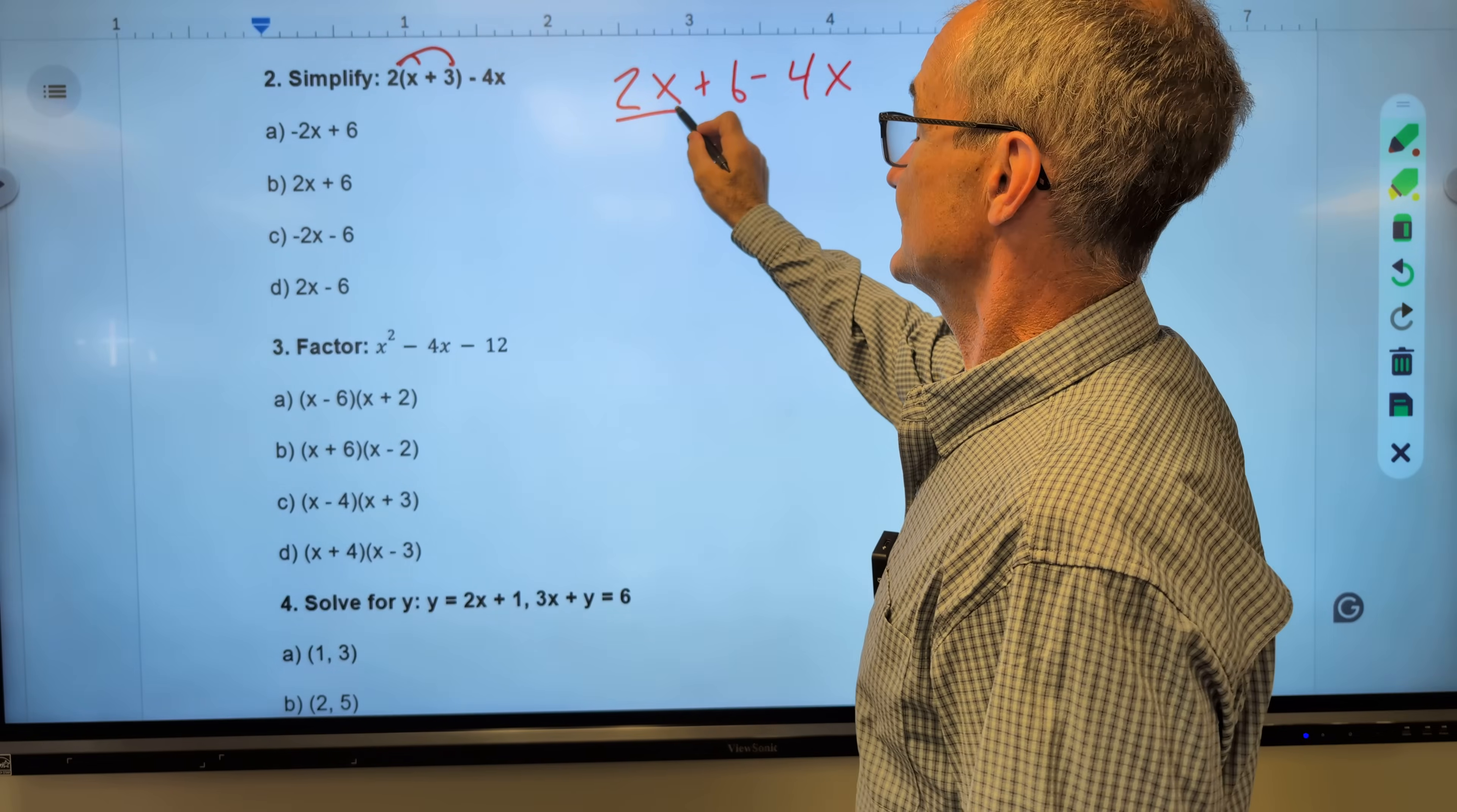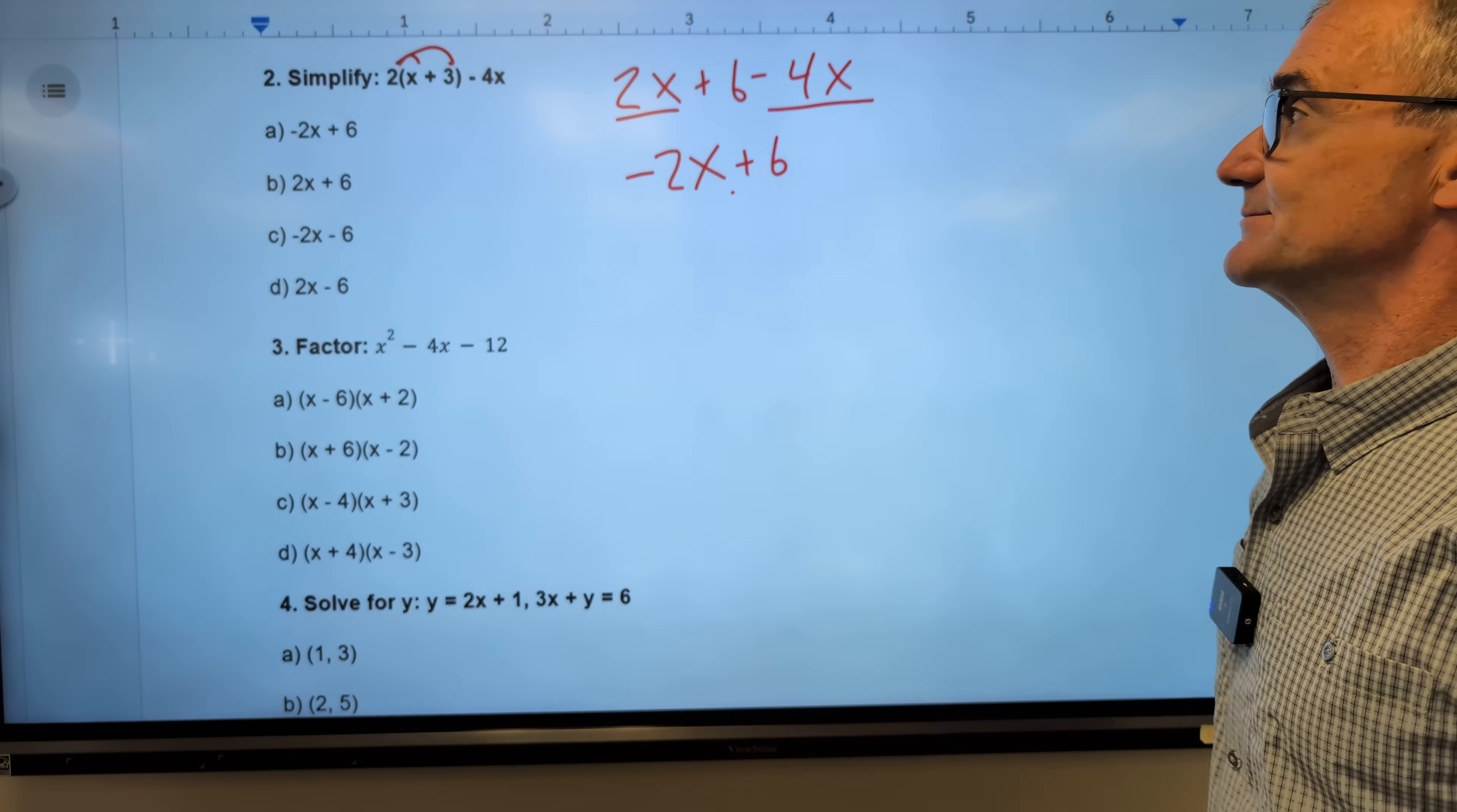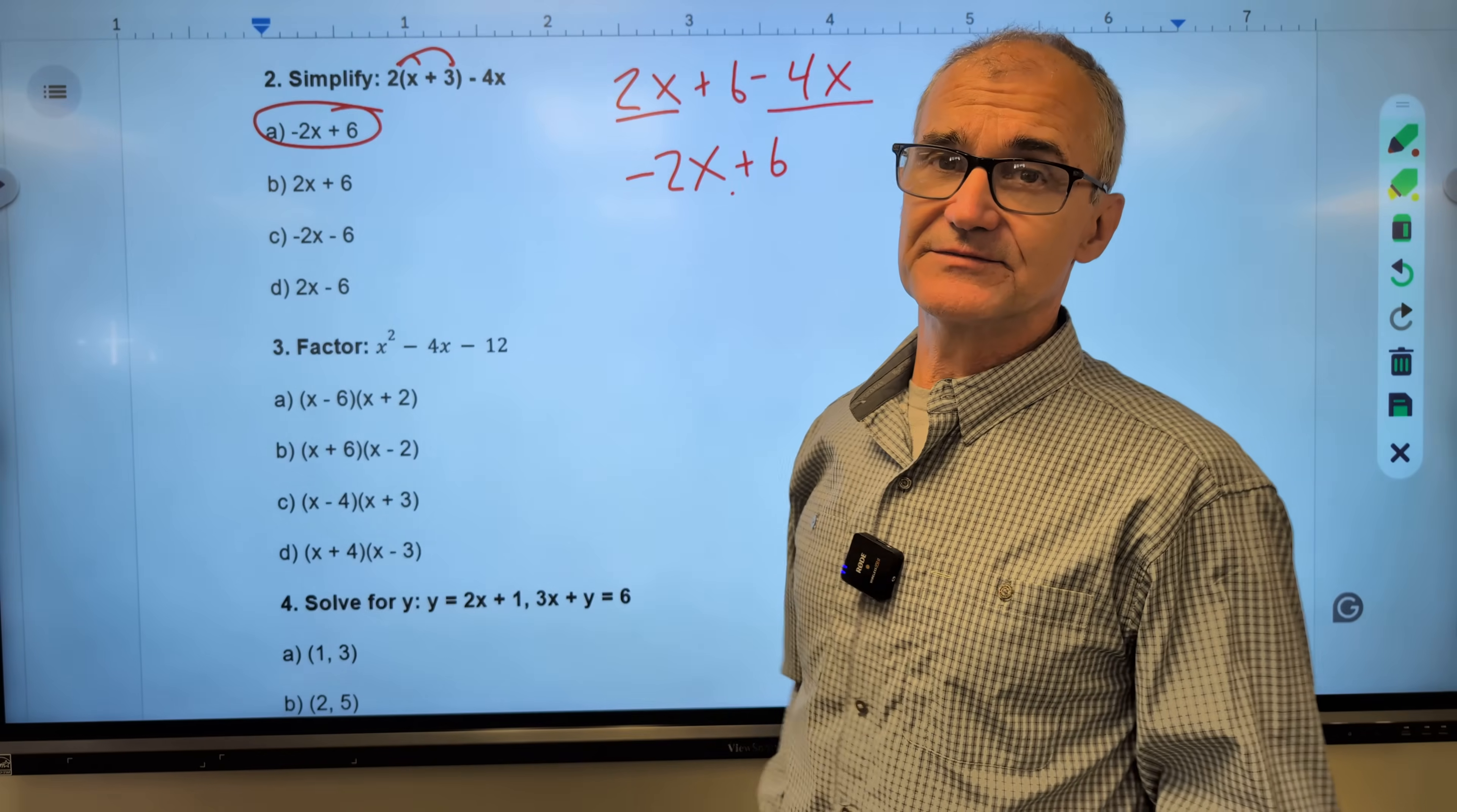I have a 2x minus a 4x. Two apples minus four apples is negative 2x. And there's nothing to do with that 6. These are dissimilar terms. They cannot be combined. So my simplified answer is negative 2x plus 6. I can't do anything more there to simplify it at all. It is not a solution. It is only a simplification.